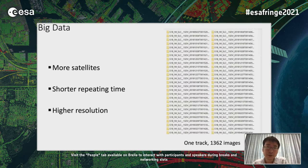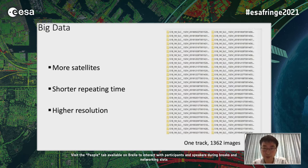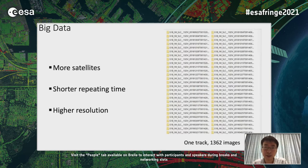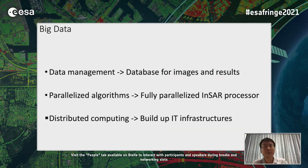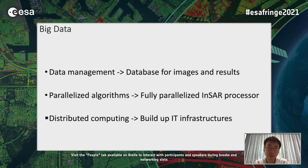For example, now we have more satellites, shorter revisit times, and higher resolutions. Here, for one track across the Tibetan plateau, we have more than a thousand images. Now we actually have more images to process than we can acquire efficiently. So we have a lot of images to manage. For big data, we need a data management system, a parallelized algorithm to speed up processing steps, and distributed computing infrastructure to finish large-scale processing.